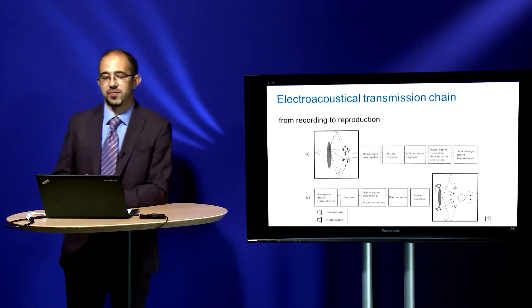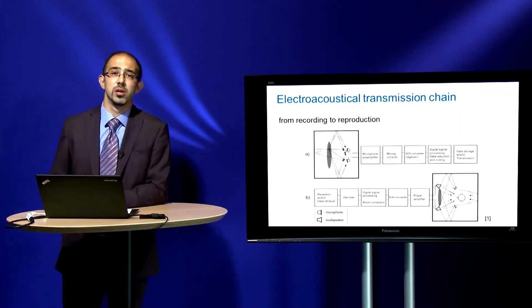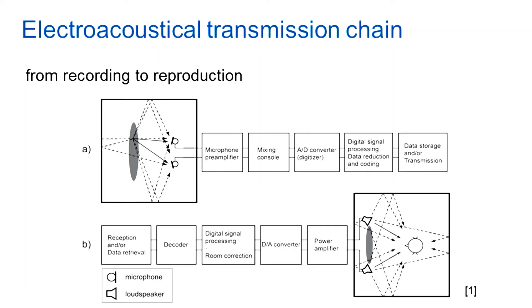I would like to start with a traditional electroacoustical transmission chain. In that case, we have different sources — it can be music, it can be speech, it can be a product sound. We need to record it, and for recording we use a transducer which we know already: the microphone. Of course, the recording environment — the room — plays also a very important role. Therefore, room acoustics is very important, which you can take as another lecture on room acoustics.